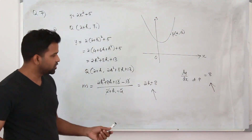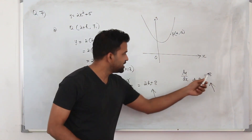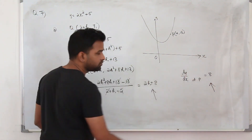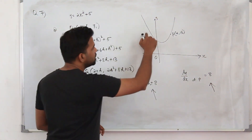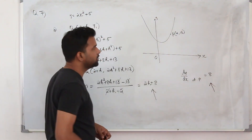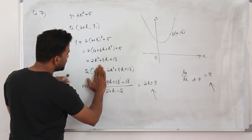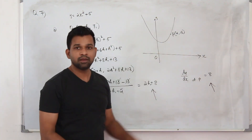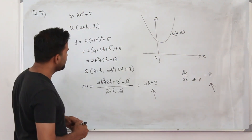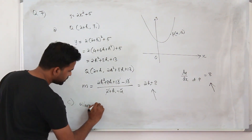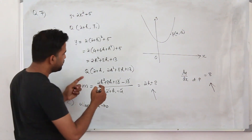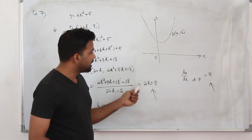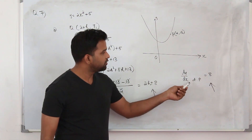When h tends to 0, both answers are the same. When h equals 0, point Q is the same as point P, because substituting h equals 0 gives Q as (2, 13), which is the same as P. So for Part C you can write: when h tends to 0, point Q and P are the same, or the gradient of the line QP equals the gradient of the function at point P, which is 8.